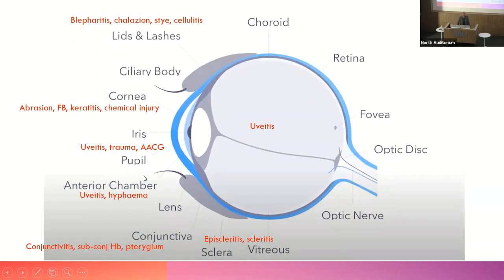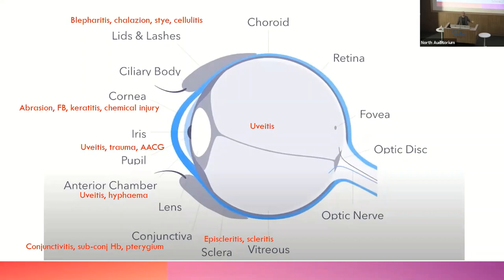What can happen to the cornea: you can scratch it, get a foreign body on it, infect it with bacteria or viruses, or pour chemicals on it. The iris and pupil can become inflamed — that's anterior uveitis or iritis. Trauma can affect the shape of the pupil. In acute angle closure glaucoma, you get a fixed mid-dilated pupil — those are the buzzwords for angle closure: fixed mid-dilated pupil, high pressure, vision down, severe pain.